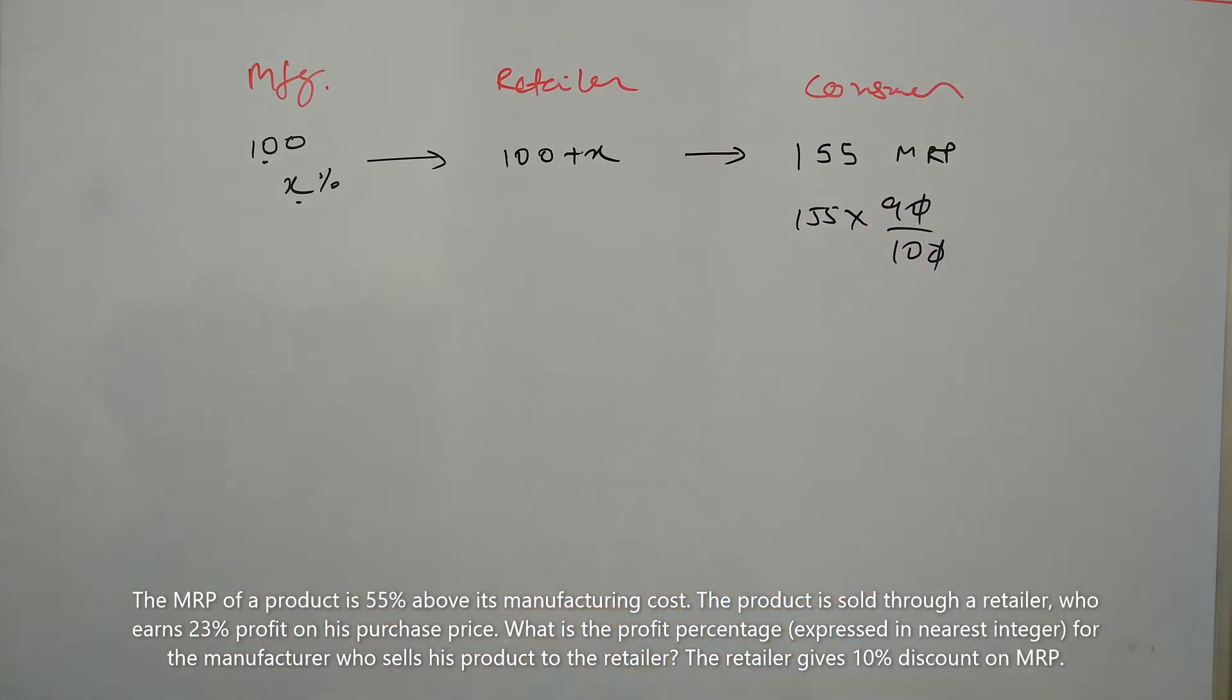If the retailer is selling the product at this price, then this is the cost price for the retailer, and this is the selling price for the retailer. In this case, the retailer is making a profit of 23%.